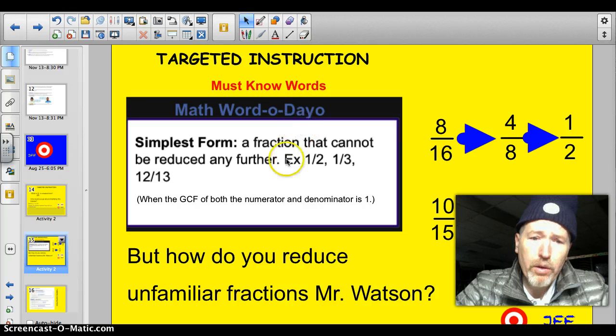Our math word of the day, simplest form, is simply a fraction that cannot be reduced any further, like 1/2 and 1/3 or 12/13. So when the greatest common factor of both the numerator and the denominator is 1, you know you're done.